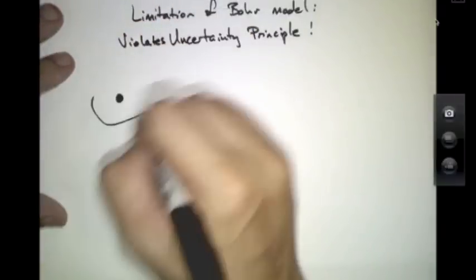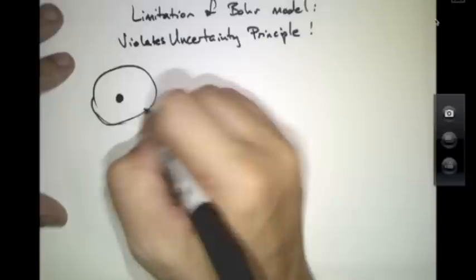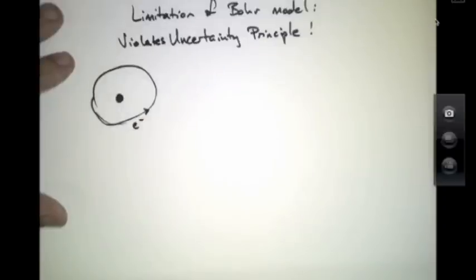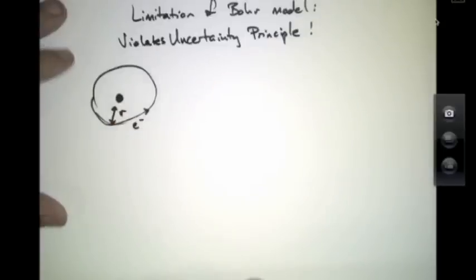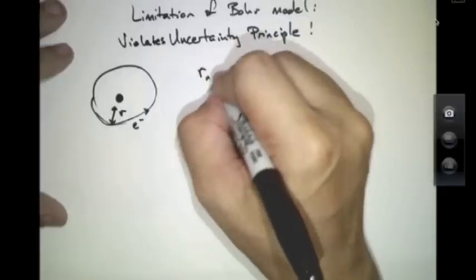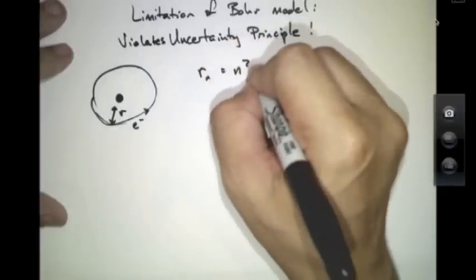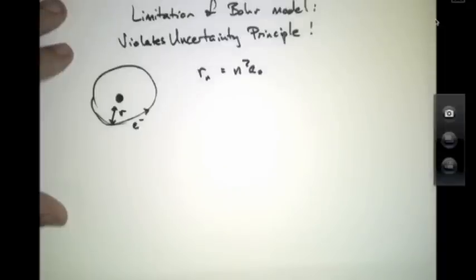Consider this nucleus with an electron orbiting around the outside. The Bohr model has a prescribed radius for that electron's orbit given by Rn is n squared a-naught, where n is an integer and a-naught is a constant.